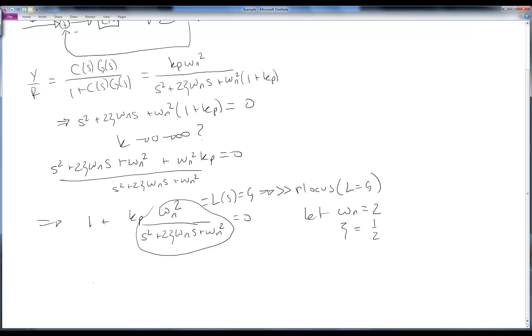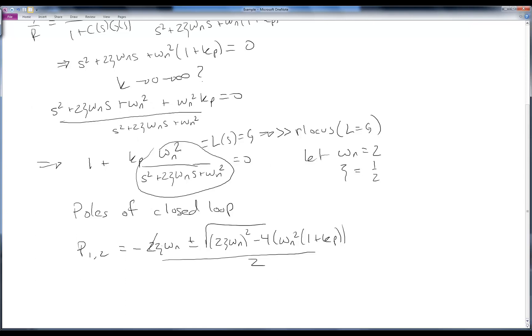Let's verify that the poles of the closed loop transfer function actually do what the rlocus command predicts. So let's go ahead and find the poles of the closed loop. We can write down p1,2 is equal to negative 2 zeta omega n plus or minus the square root of 2 zeta omega n squared minus 4 times omega n squared times 1 plus kp. And then that's all divided by 2. All these 2's here we'll go ahead and cancel out. And we can go ahead and factor out a omega n squared and a minus 1. And we end up with minus zeta omega n plus or minus j omega n times the square root of 1 plus kp minus zeta squared.